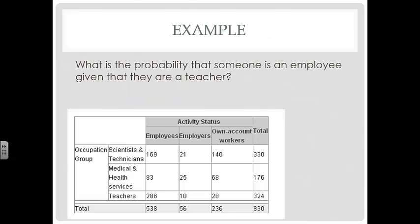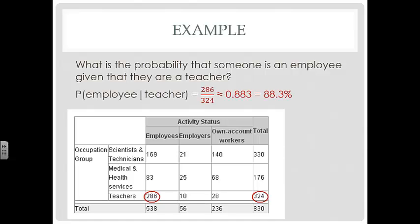For example, in our contingency table we want to know what is the probability that someone is an employee given that they are a teacher. So we're looking at the number of teachers, that's 324 — that's the given — and we want to know how many of them are employees, and we find 286. So the probability that someone is an employee given that they are a teacher is 286 out of 324, which is about 88.3%.